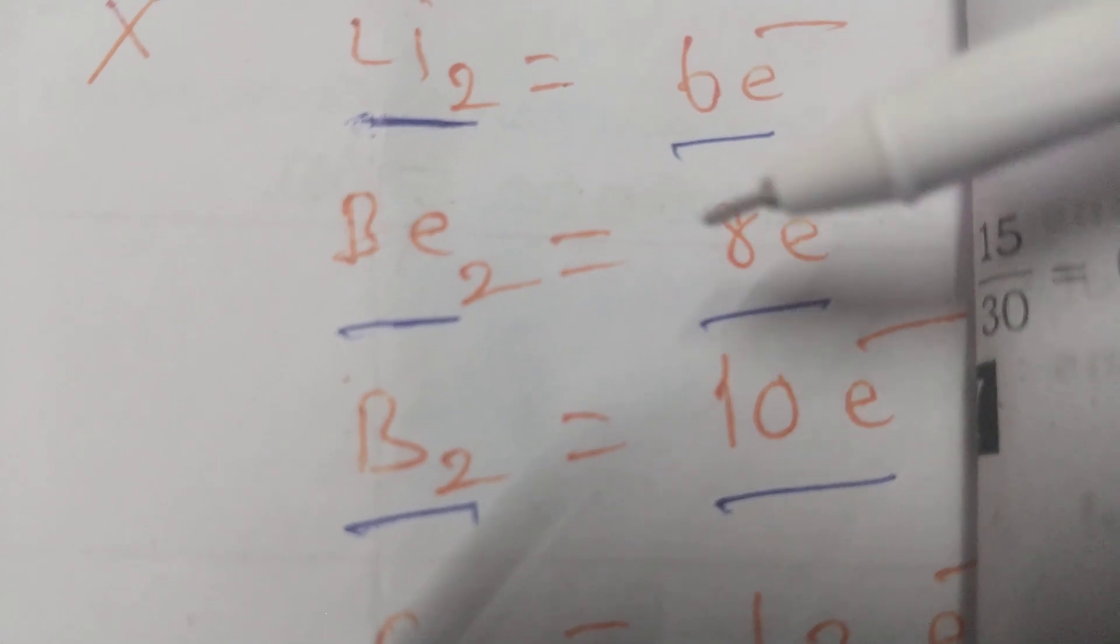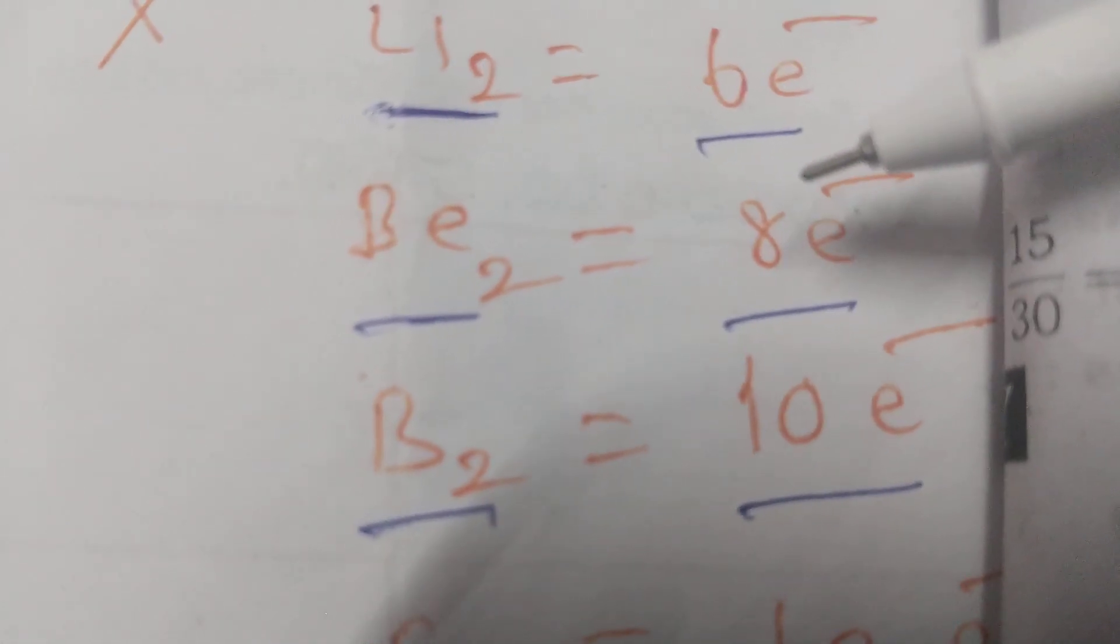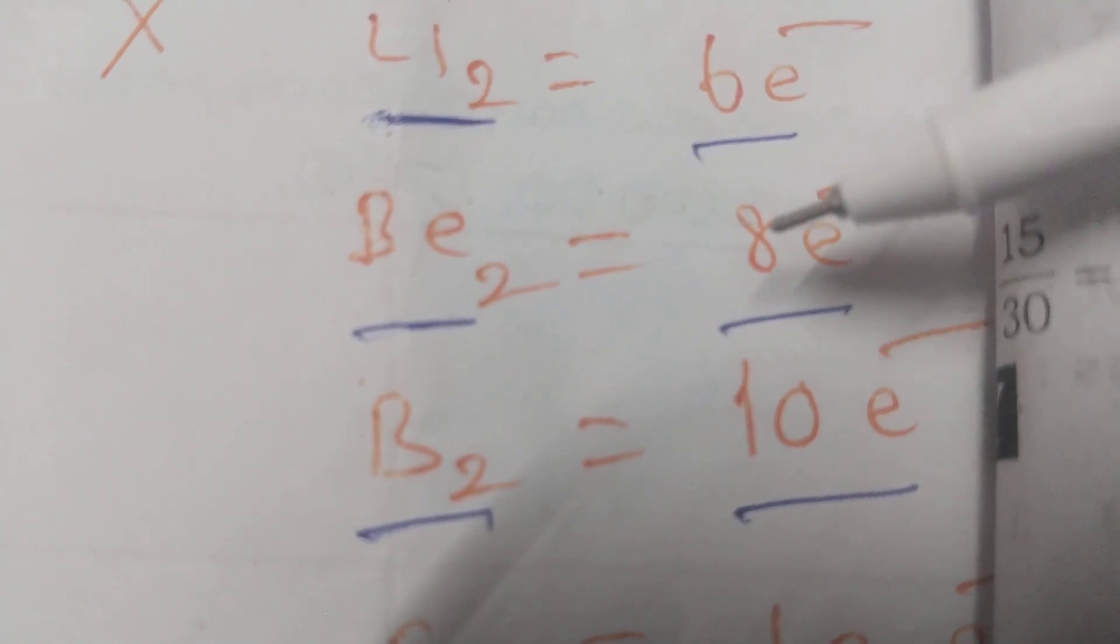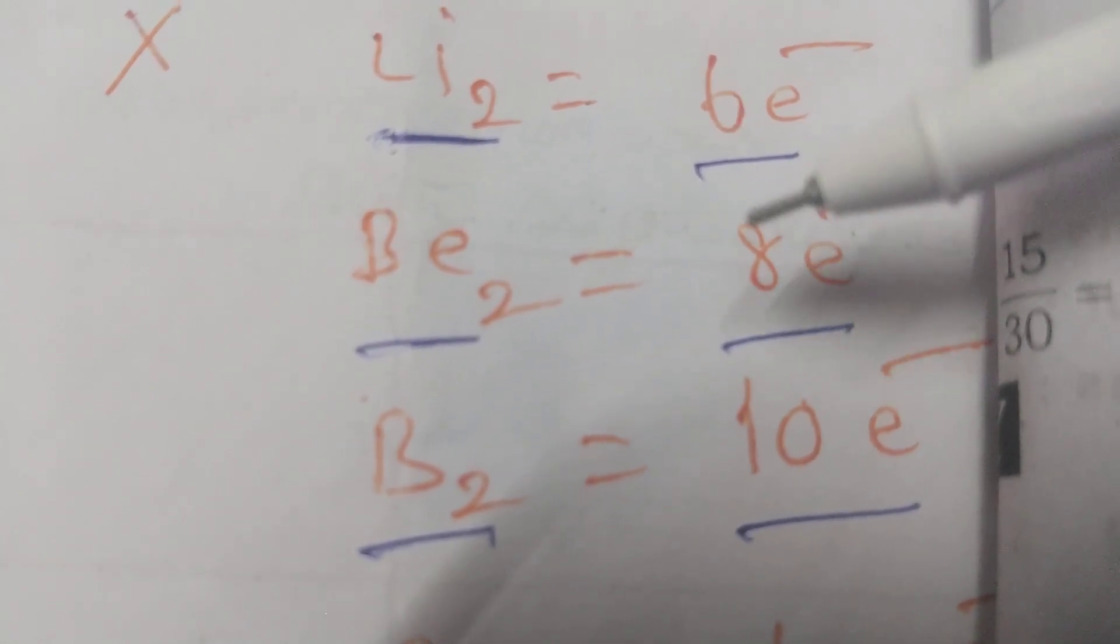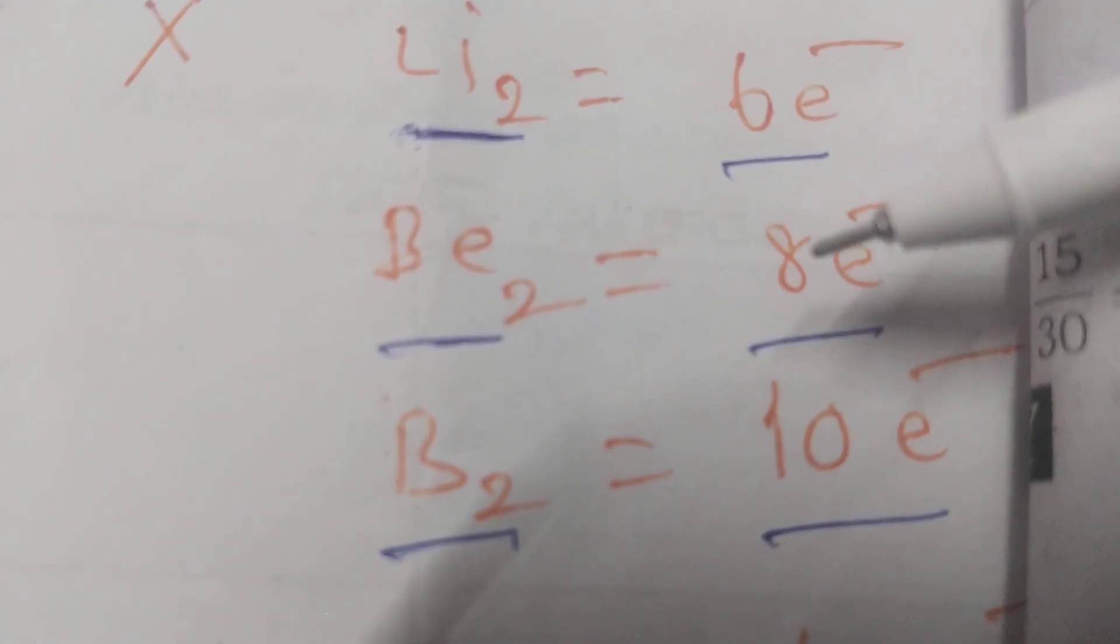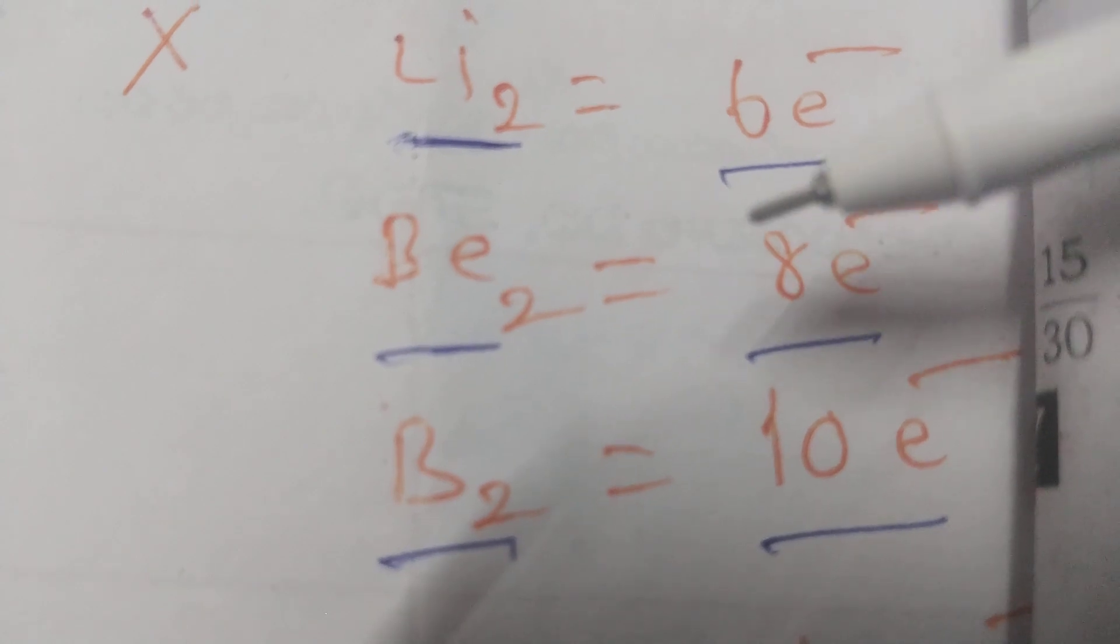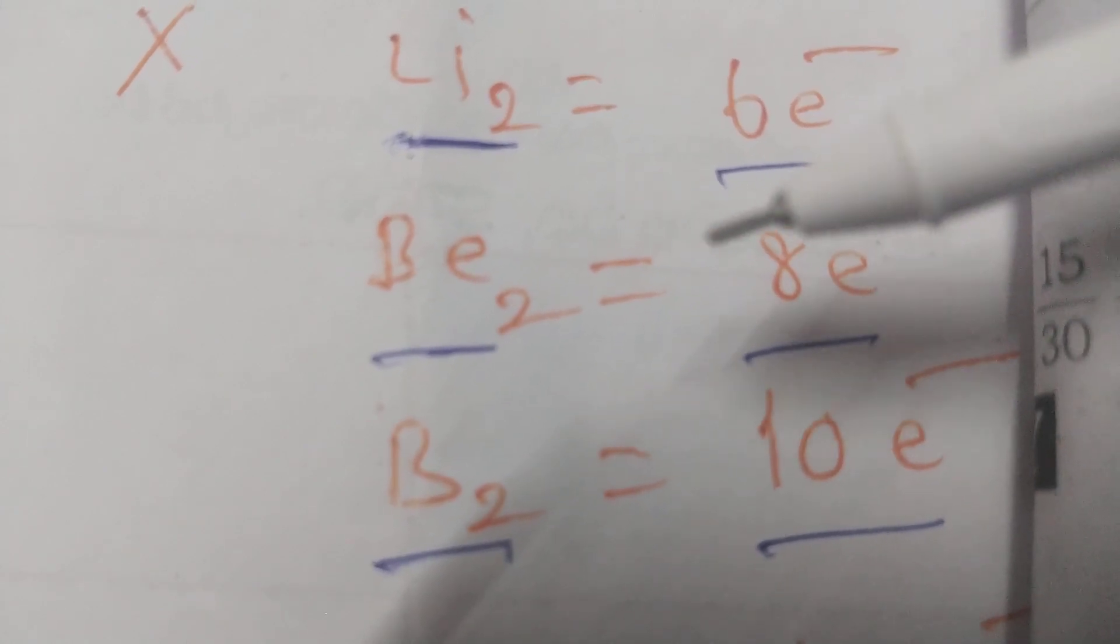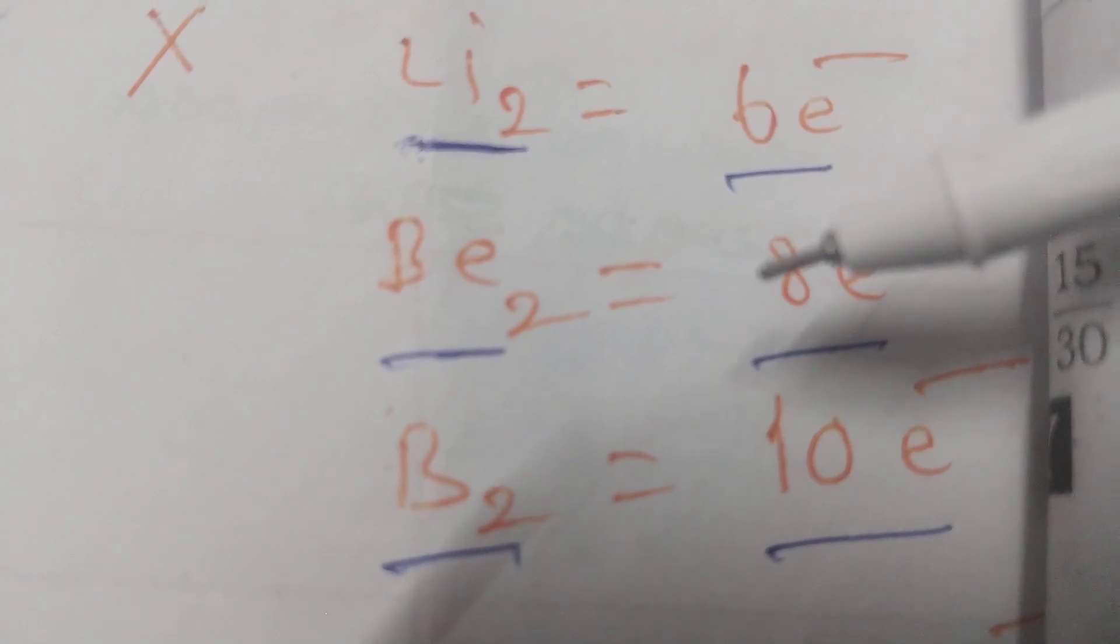So 4 minus 4. Number of bonding electrons 4, number of anti-bonding electrons 4, 4 minus 4 by 2, that is equal to 0. Sigma 1s2, sigma star 1s2, sigma 2s2, sigma star 2s2. So bonding electrons 4, anti-bonding electrons 4, 4 minus 4 by 2, that is equal to 0.